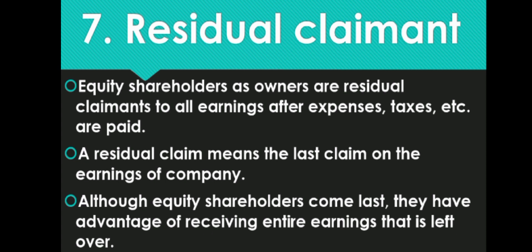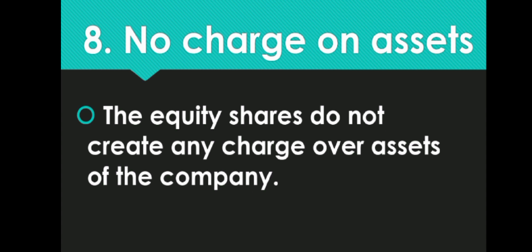Residual claimants to all earnings after expenses, etc. — whatever is left over, equity shareholders get it. Whatever amount of money is left is distributed among equity shareholders. Next is No Charge on Assets, meaning the equity shareholders do not create any charge over the assets of the company. If they don't receive money, they cannot take the company's assets.